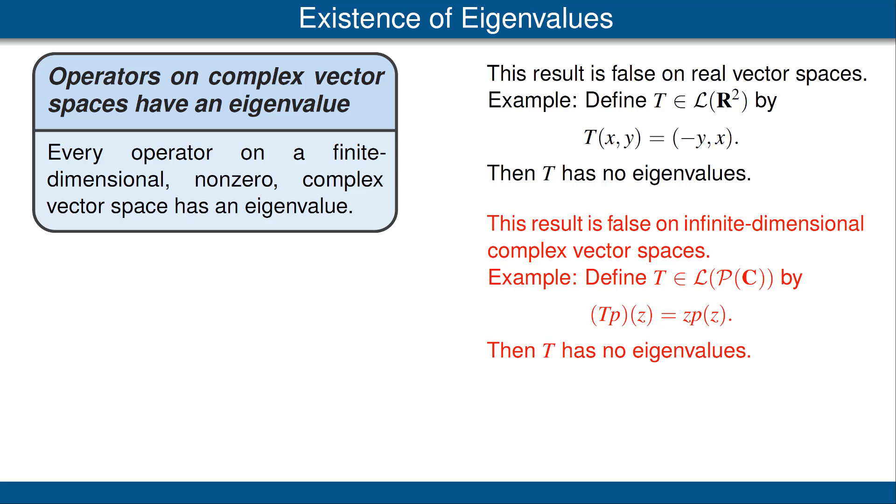This result is also false on infinite-dimensional, complex vector spaces. For example, define T to be the linear operator on the vector space of polynomials with complex coefficients by defining Tp of z to be z times p of z. In other words, T is the operator of multiplication by z. For example, if p is the polynomial z squared, then T of p is the polynomial z cubed. Because T of p has degree one larger than the degree of p, it's clear that T of p cannot be a scalar multiple of p. Thus, T has no eigenvalues.